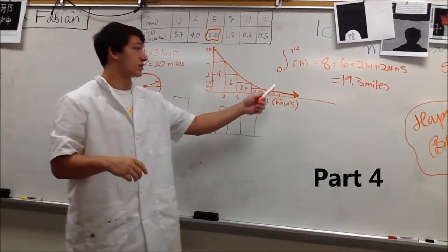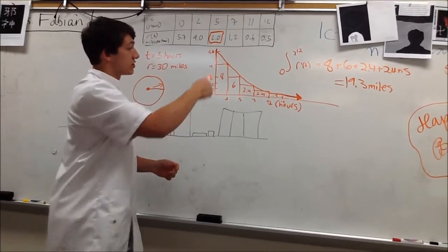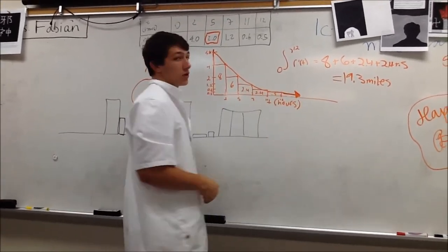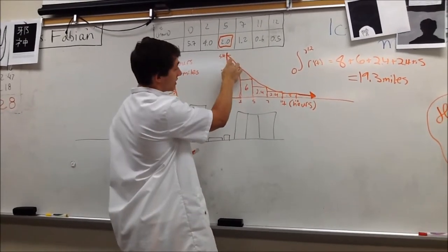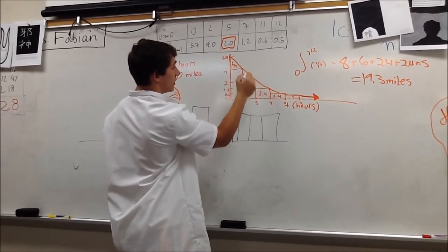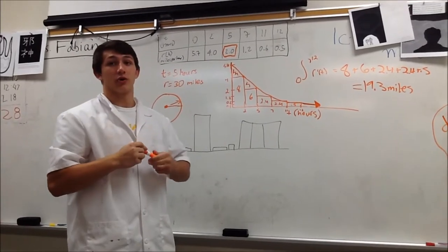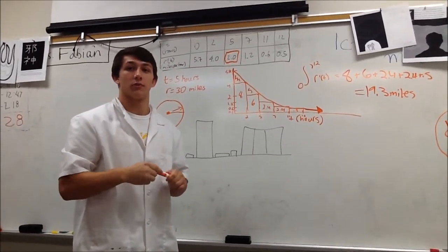As we know from the graph representation of r prime of t, it is slowly decreasing to 0. So when you do the right Riemann sum, we also know that it's a little bit less, as you can see, this area is right here. It's a little bit less than the actual value of the integral between 0 and 12 of r prime of t.